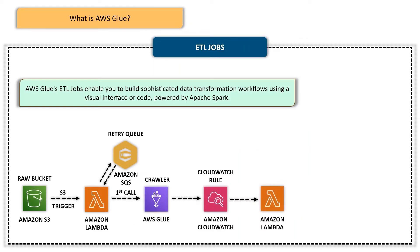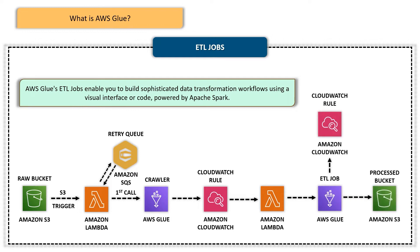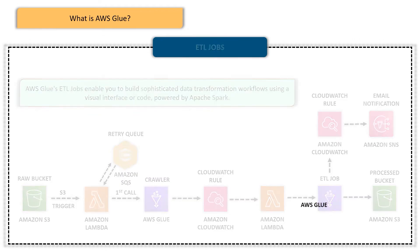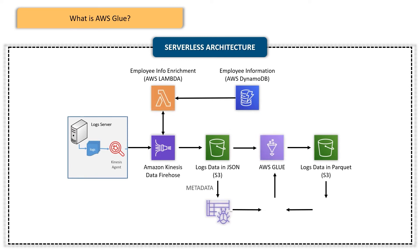AWS Glue's ETL jobs are the heart and soul of the service. They enable you to build sophisticated data transformation workflows using a visual interface or code powered by Apache Spark. With ETL jobs, you can effortlessly transform data from one format to another, apply complex business logic, and cleanse data to ensure its quality and integrity. AWS Glue automatically scales the underlying infrastructure to handle large datasets and parallel processing — a true game changer for data engineers and analysts.